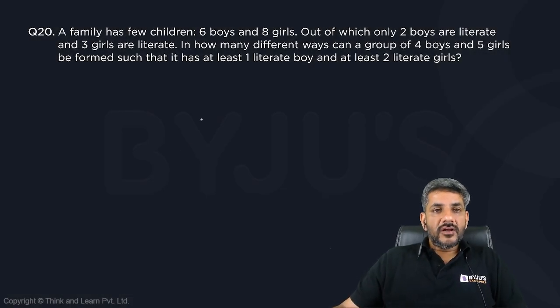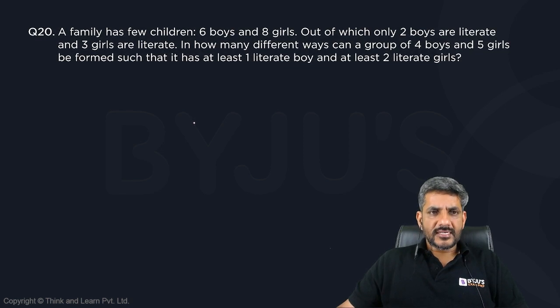Here we have question number 20. A family has few children: six boys and eight girls, out of which only two boys are literate and three girls are literate. In how many different ways can a group of four boys and five girls be formed such that it has at least one literate boy and at least two literate girls?